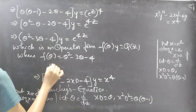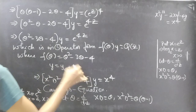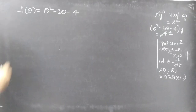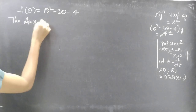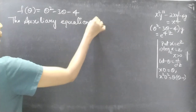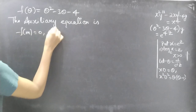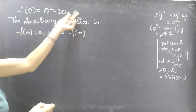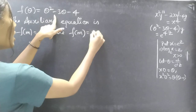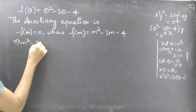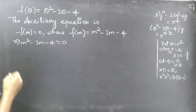The general solution is y equals yc plus yp. We will find yc using the auxiliary equation and later find yp. The auxiliary equation is f(m) equals 0, where f(m) equals m² minus 3m minus 4, obtained by replacing the differential operator θ by m.